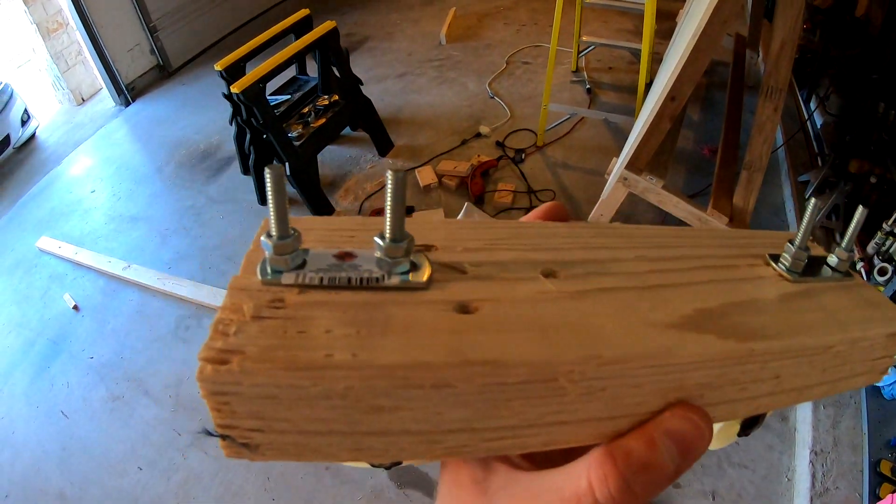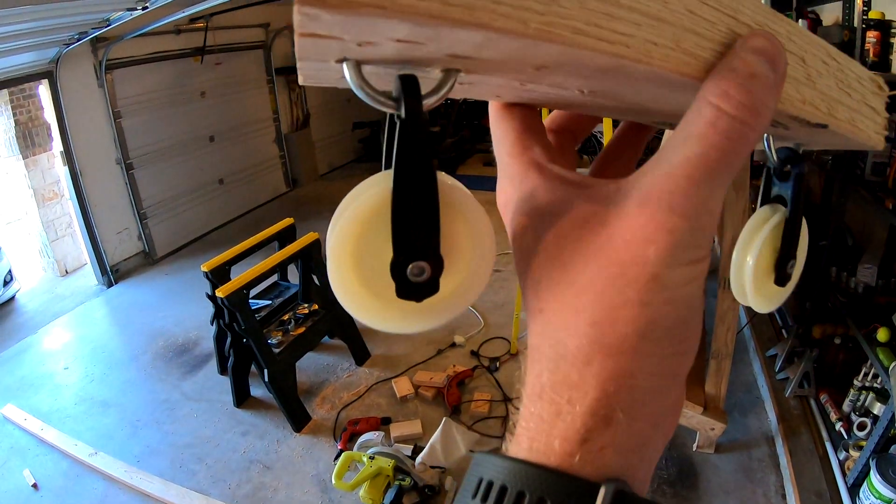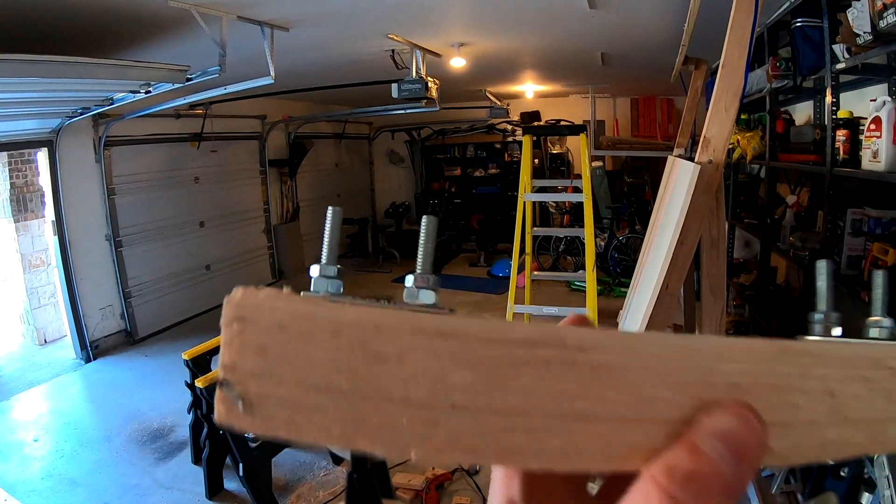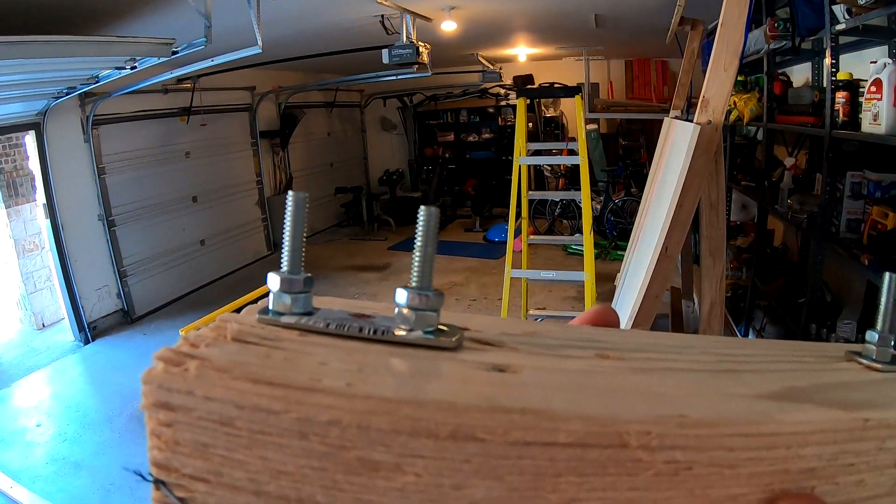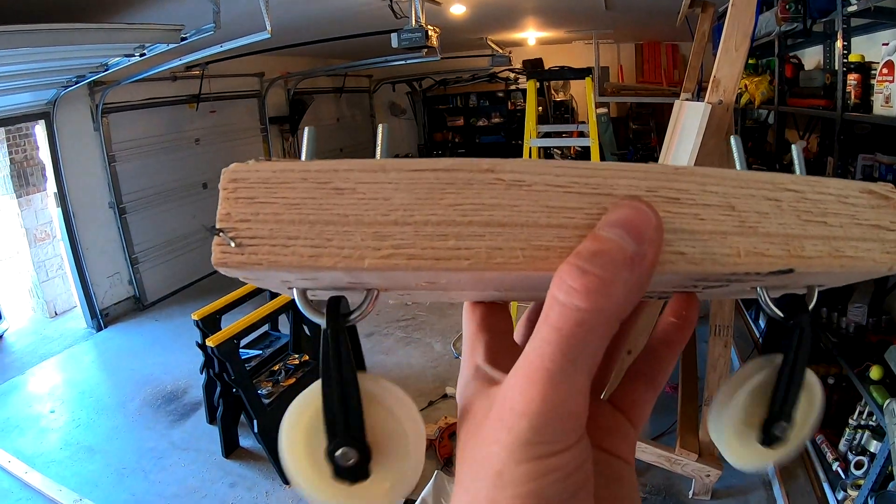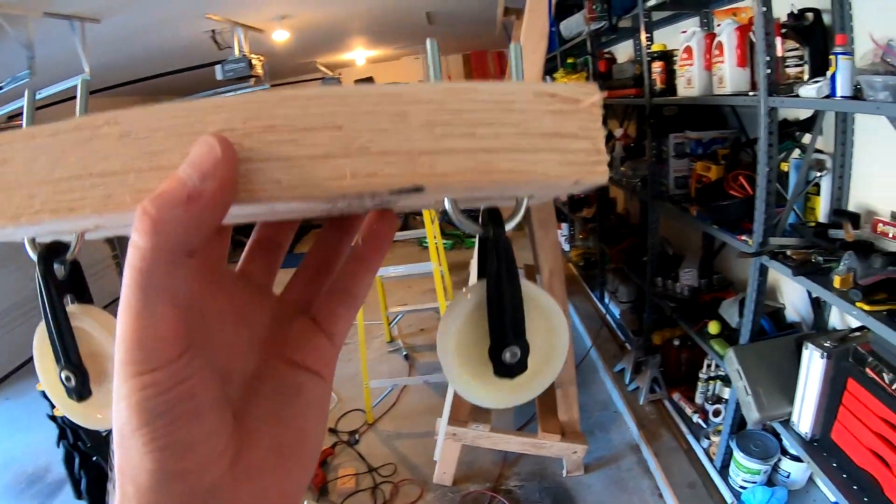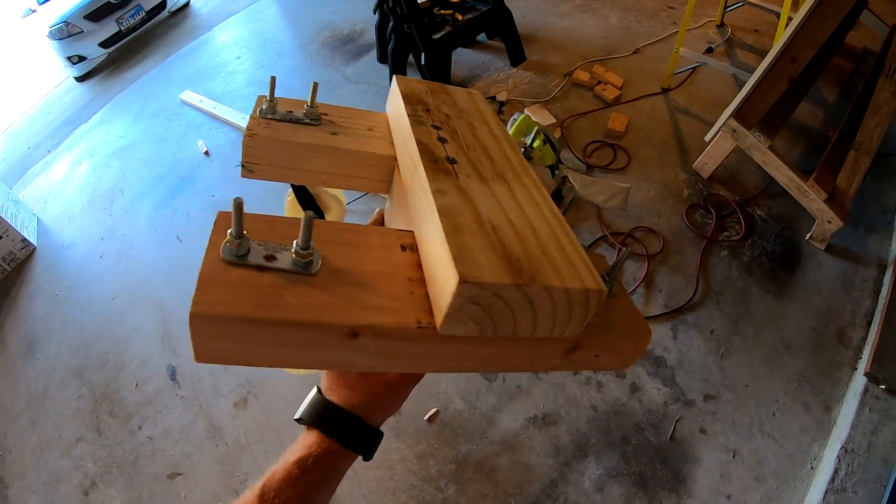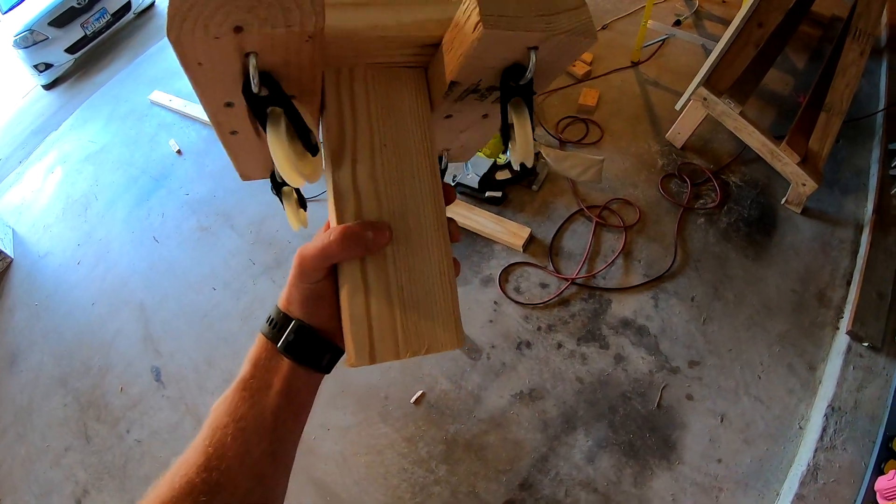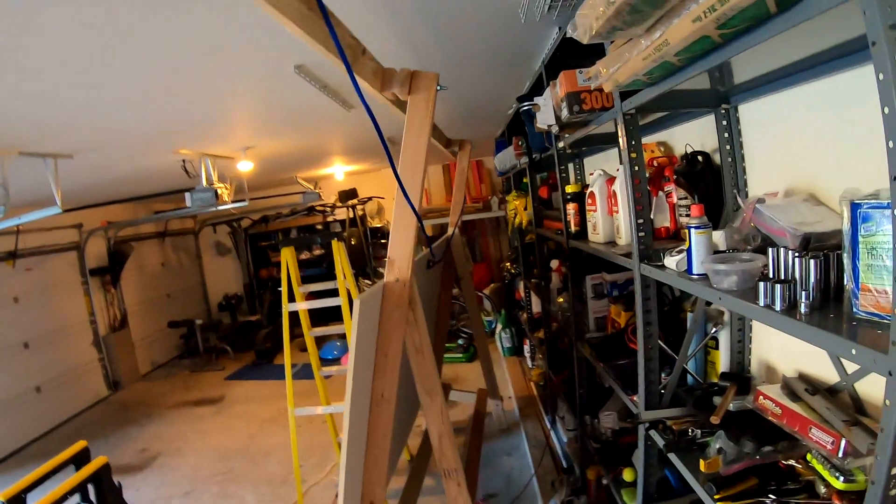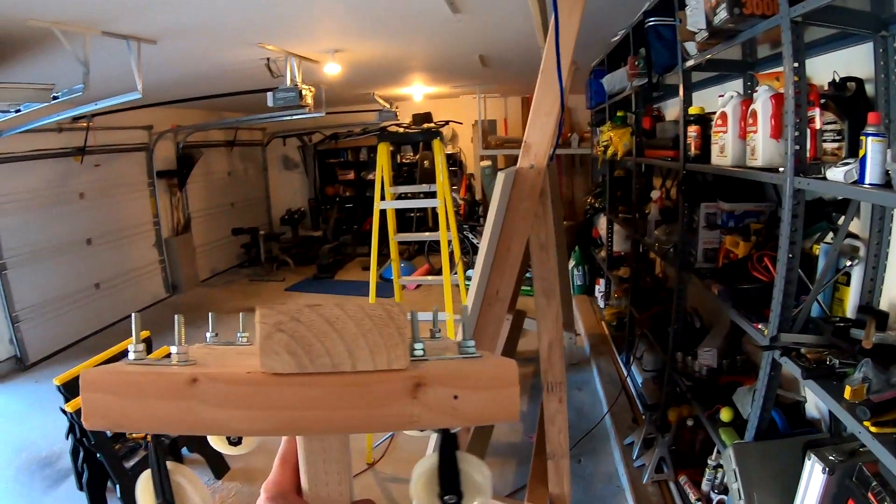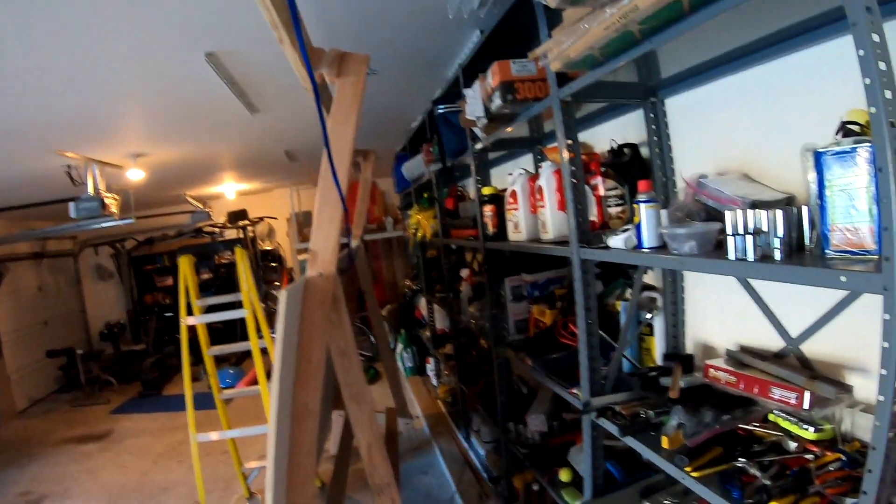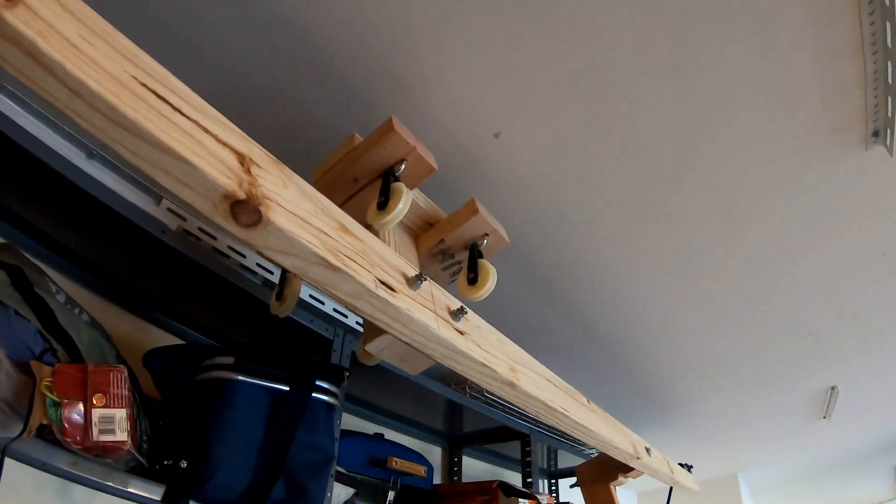All right, now we're going to work on the counterweight system. Just for posterity, this is the top pulley system. These are for like clothesline and little U-bolts that are just double nut, double nutted against each other to keep it from going in or out. So now we got to mount it up there. All right, here's the finished assembly.